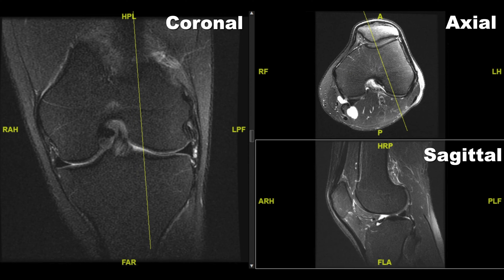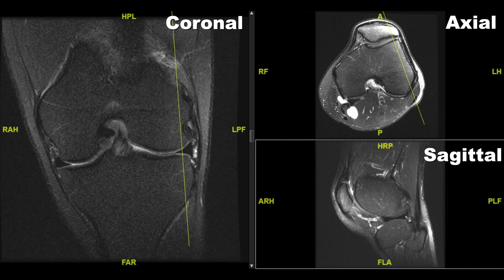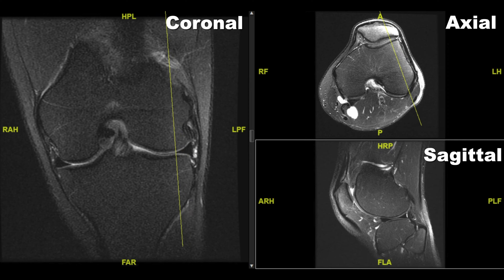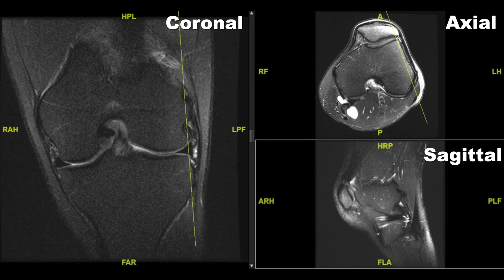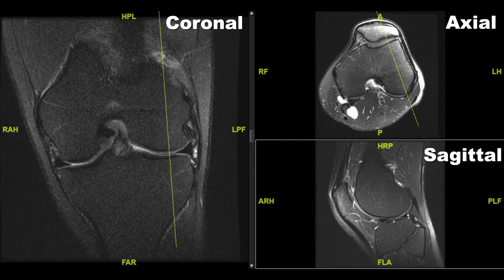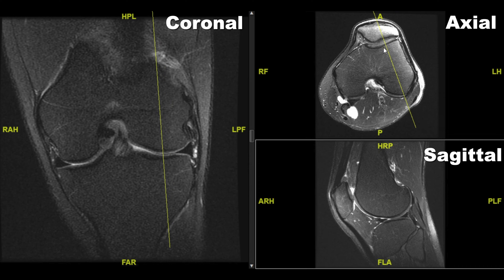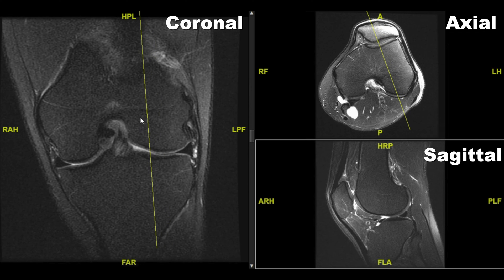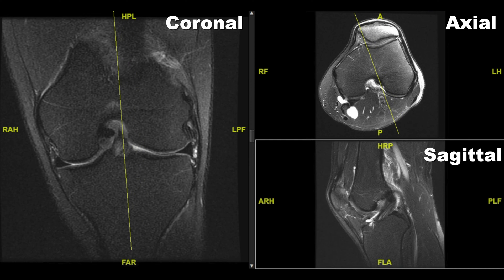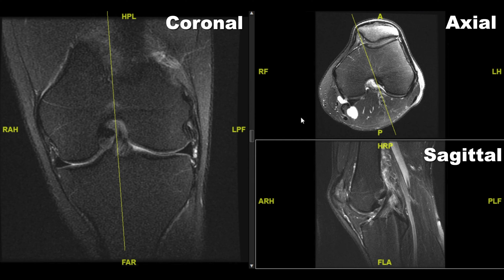Let's do one more example. On the coronal image, here's the lateral side and here's the medial side of the knee. On the axial, here's lateral and here's medial. If we're on the sagittal and we start moving from lateral to medial, you can see the localizer line moving through the knee from lateral to medial on the axial, and on the coronal from lateral to medial as well. Each one of these different images gives us different perspectives on the anatomy of the knee and helps us really localize pathology, injuries, and things like that.